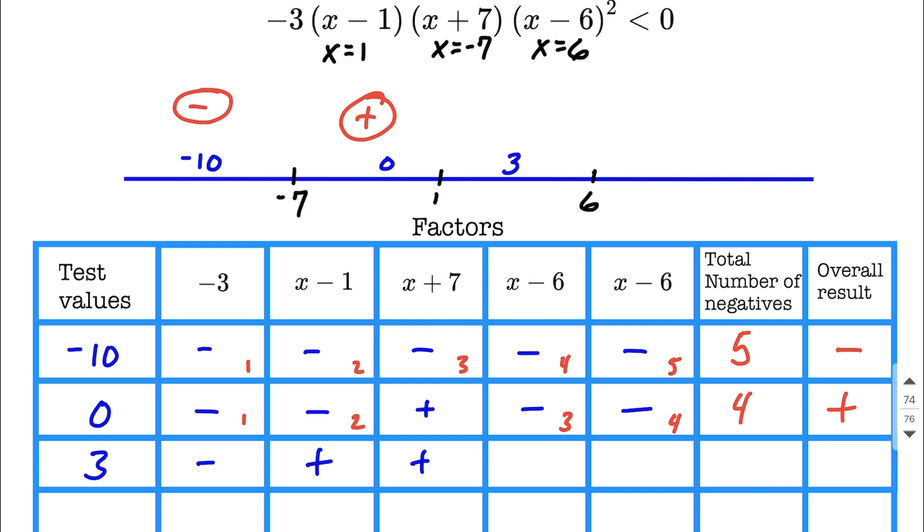Positive 3 minus 6 is going to be negative 3. And the same thing goes here. Next, counting them up, we have 1 negative, 2, 3 total going across there. So 3, an odd number, gets us to a negative overall result.